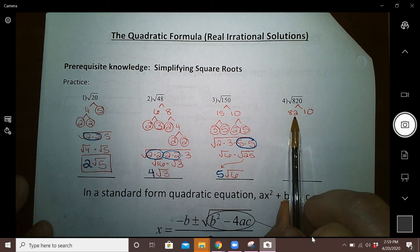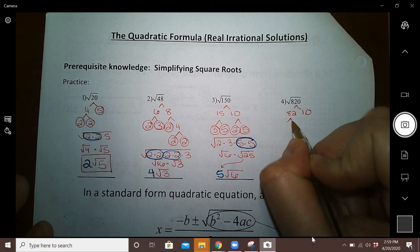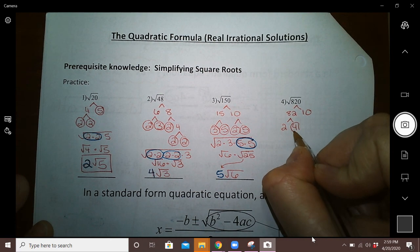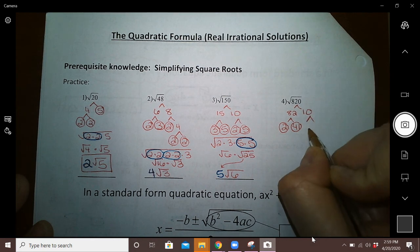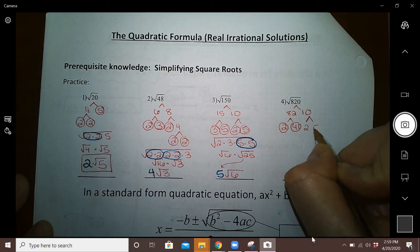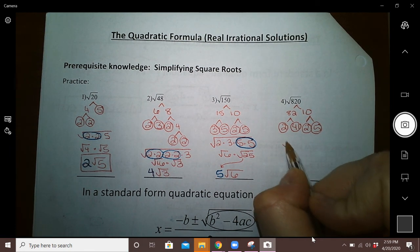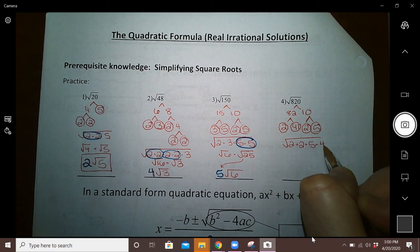So this would be 82 times 10. Neither of which are prime, so break it down one more level. Anything that is even can be divided by 2, and 82 divided by 2 is 41. And 41 happens to be a prime number. We've already broken 10 down into 2 times 5, so that one should be easy.